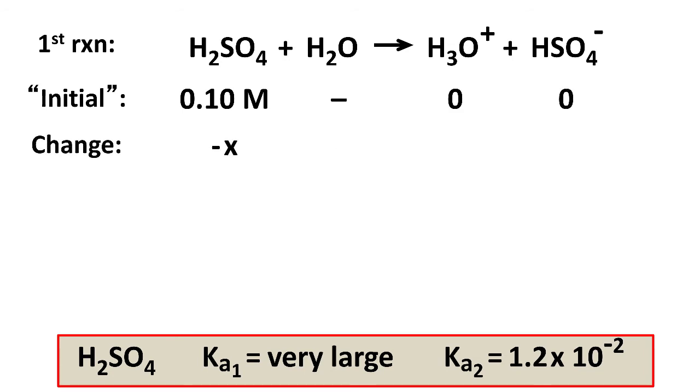And now it'll change by some amount, normal equilibrium, plus X and minus X stuff. And so at the end of the first dissociation, we have the following, 0.1 minus X for the equilibrium concentration of H2SO4, X for H3O plus, and X for HSO4 minus.